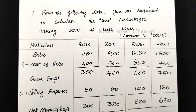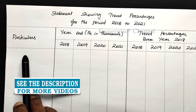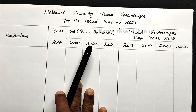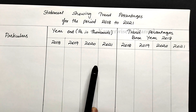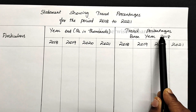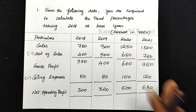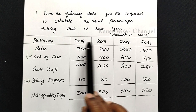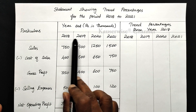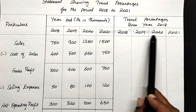Now let us see the solution. Statement showing trend percentages for the period 2018 to 2021. We record particulars and year-end data for 2018, 2019, 2020, and 2021, with amounts in rupees thousands. We copy all the information from the question as it is into the solution table. After recording all the information, we are going to calculate trend percentages. The base year is 2018, and based on that we calculate trend percentage for all the other years.